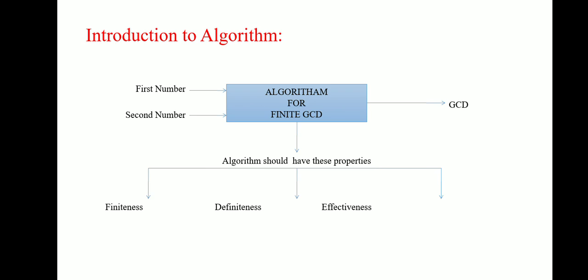These are the characteristics of algorithm. Now let us consider algorithm design tools. Algorithms can be designed by using pseudo code or flowchart. Here, there is an example of algorithm for finding greatest common divisor or GCD. In this case, there are two inputs named as first number and second number, and output is greatest common divisor. Now let us consider one example.